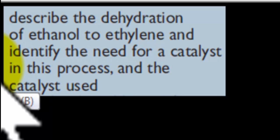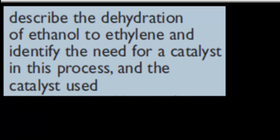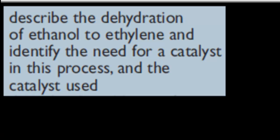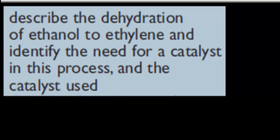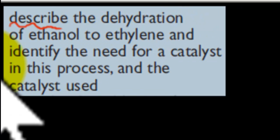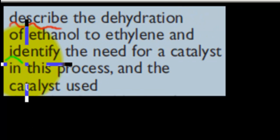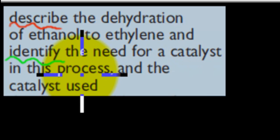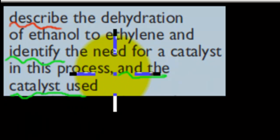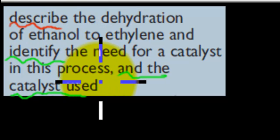So I'll go over the actual syllabus dot point. It says: describe the dehydration of ethanol to ethylene, and identify the need for catalysts in the process and the catalyst used. This has two steps — first, describe the dehydration of ethanol to ethylene, and also identify the need for catalysts. So we'll describe the dehydration of ethanol to ethylene first.